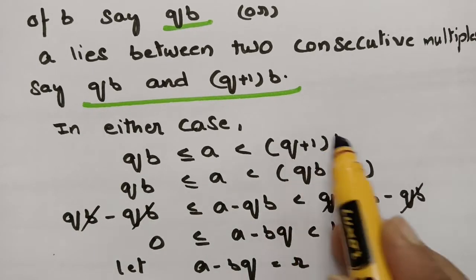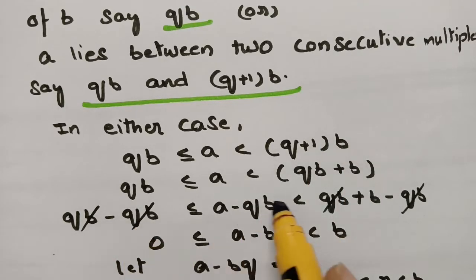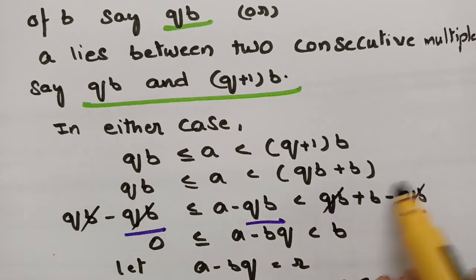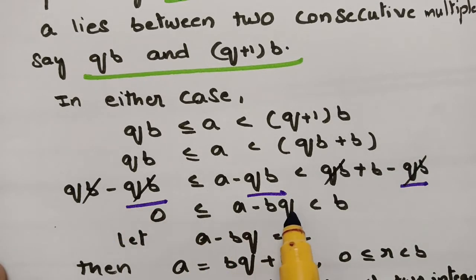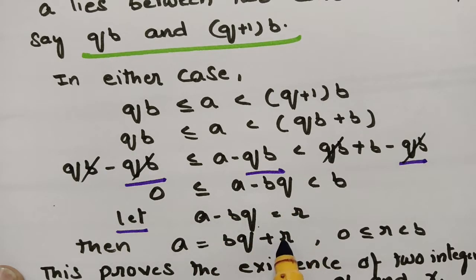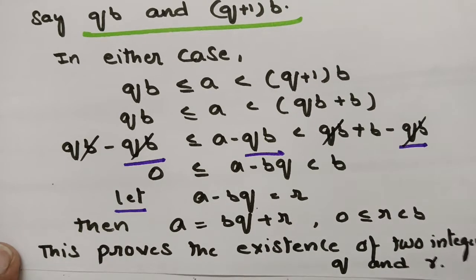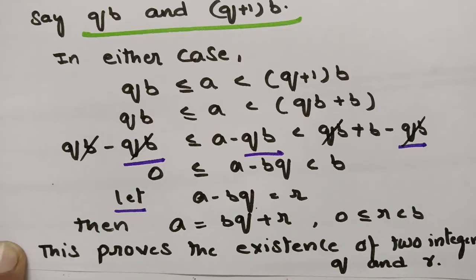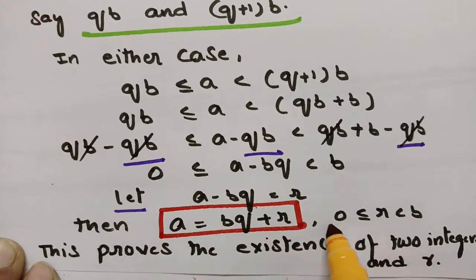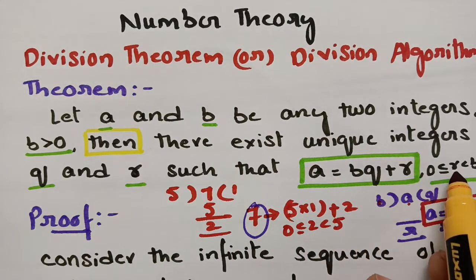So (q+1)b = qb + b. If I subtract qb throughout the inequality, I get: 0 ≤ a − bq < b. Let a − bq = r. Then a = bq + r. And as we know, the remainder should be either 0 or strictly less than b. This proves the existence of two integers q and r. So we now have our theorem: a = bq + r where 0 ≤ r < b.